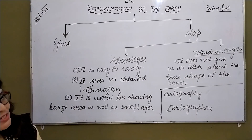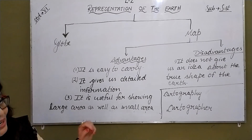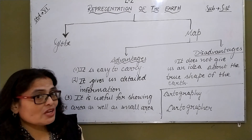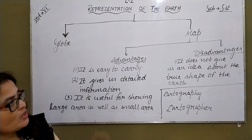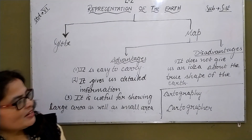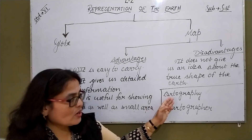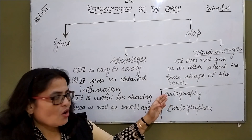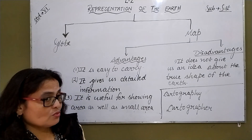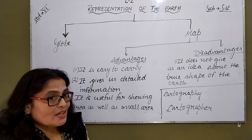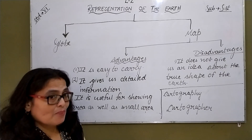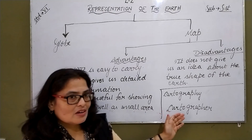A map is a representation of the earth, but it does not give us an idea about the true shape of the earth. The true shape of the earth can be shown only on a globe. Now, what is cartography? Cartography means the science of map making. And who are cartographers? The persons who are expert in making maps are known as cartographers.